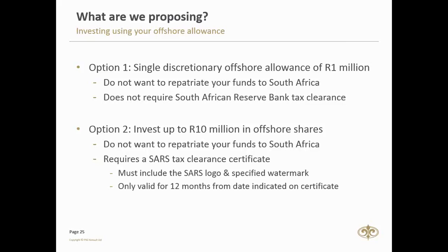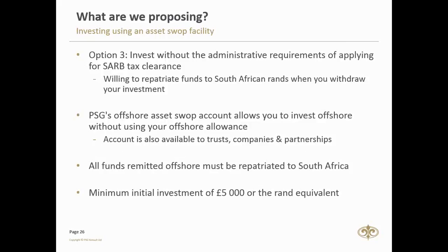The tax clearance doesn't last forever — you must use it within 12 months from the date indicated on the certificate. PSG Wealth is there to help you through that process. The third option applies if you've exhausted your offshore allowance and want to take more money offshore, or if your investments are in a trust, company, or partnership — for example, an investment club.